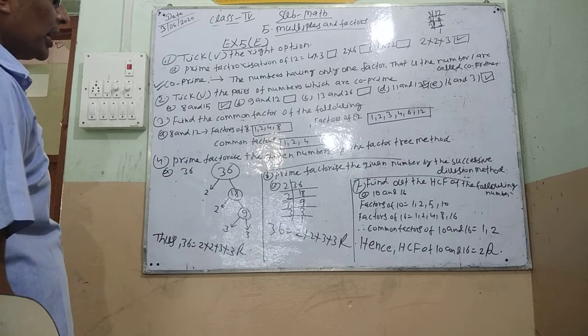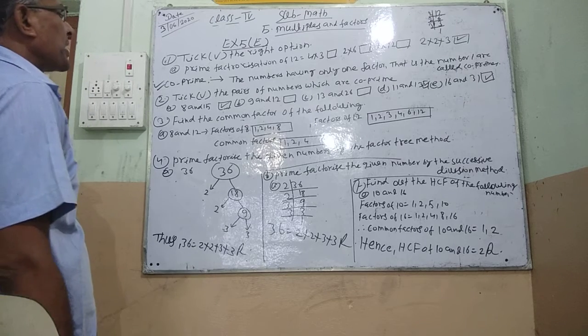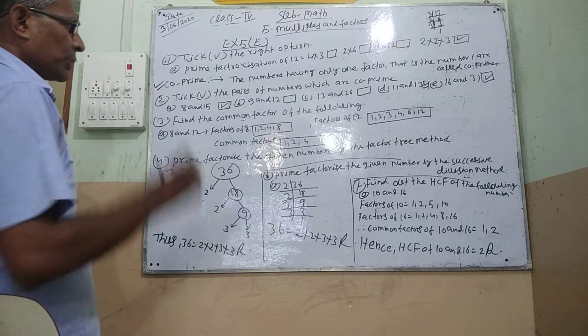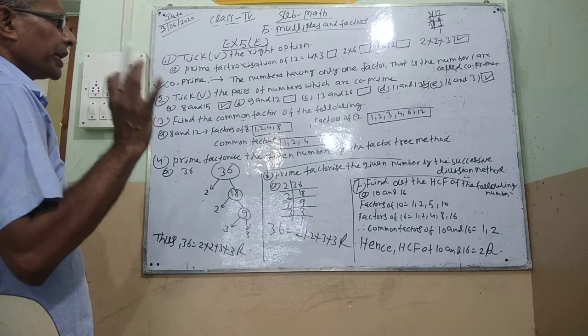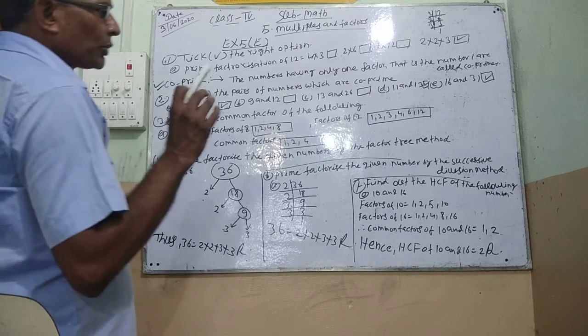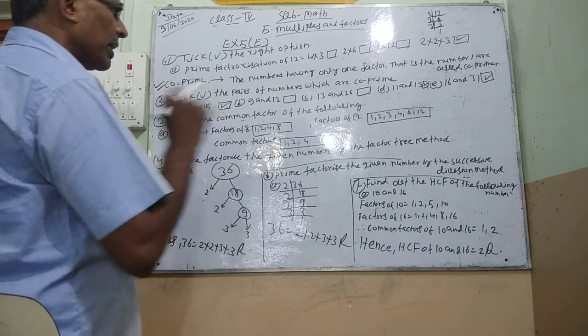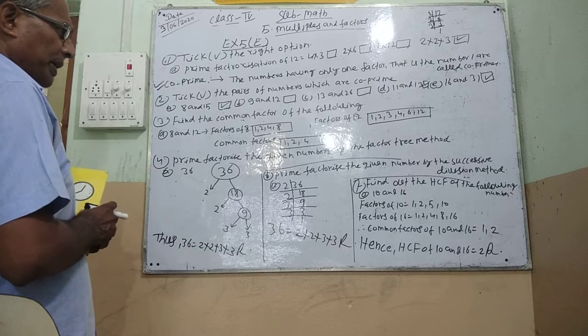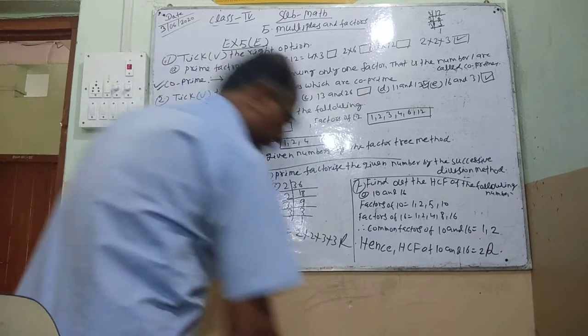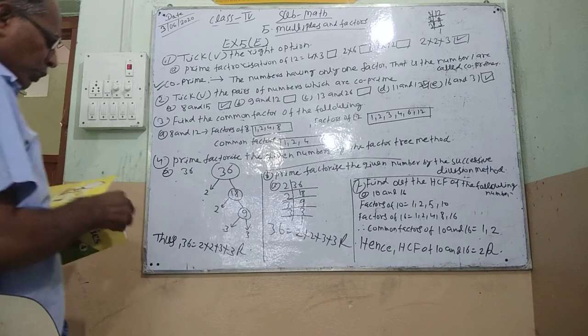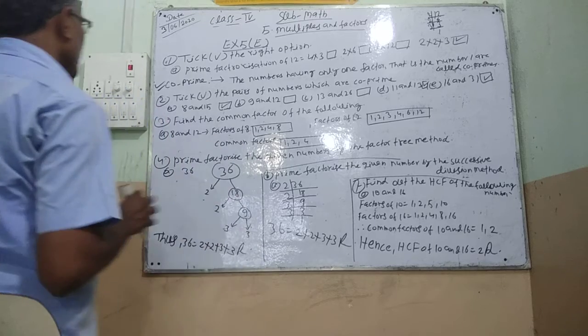Find the common factors of the following. We have 8 and 12. Factor of 8 is 1, 2, 4, 8. Factor of 12 is 1, 2, 3, 4, 6, 12. Common factors are 1, 2 and 4. So common factors of 8 and 12 are 1, 2, 4.